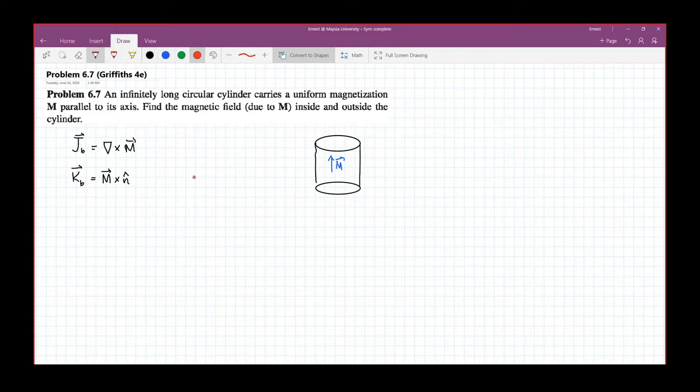Now what is n hat? So if this is your circular cylinder, the n hat will be in this direction which is s hat. We're using cylindrical coordinate system. So remember that this is s hat, this is z hat, this direction is phi hat.